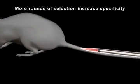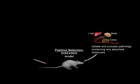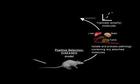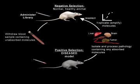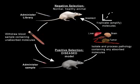This cycle includes the isolation and processing of the pathological tissue containing any absorbed molecules. This is followed by amplification of the molecules, which are then administered into a healthy animal for reselection. The cycle is repeated again in a negative or counter-selection step. A blood sample containing the unabsorbed molecules is then withdrawn from the healthy animal, and the unabsorbed molecules are again administered into the diseased animal for positive selection.